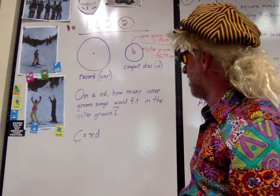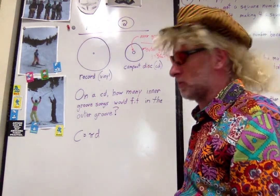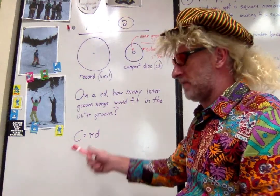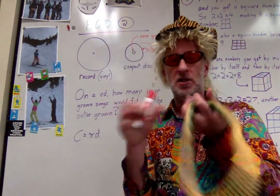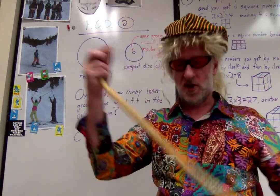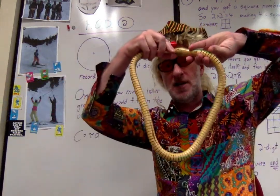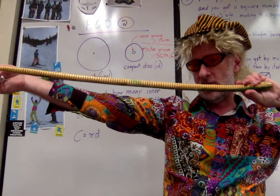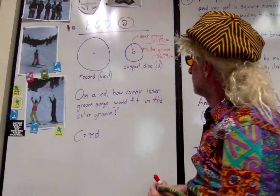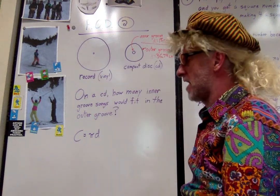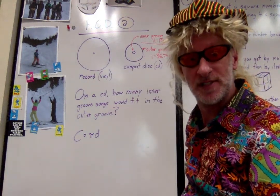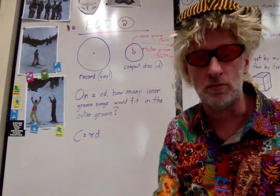All right so there you have it everybody. The trick to solve this problem is let's find the circumference, because remember circumference is the distance around that circle and then we're just gonna straighten it out. That's circumference right there. The circumference of that circle is the length of this straight line. So let's find the circumference of that inner groove, let's find the circumference of that outer groove, and maybe do a little division. Good luck everybody, see you later.